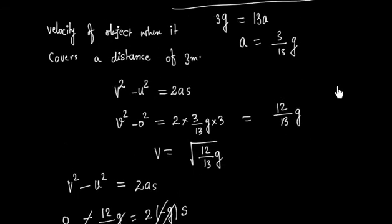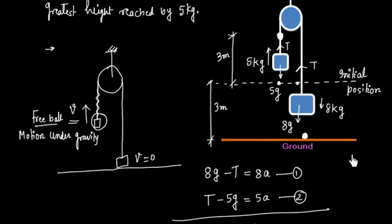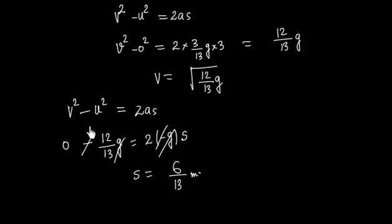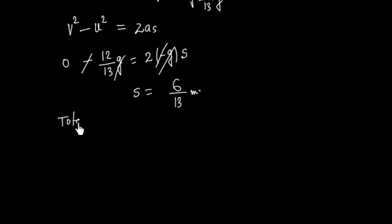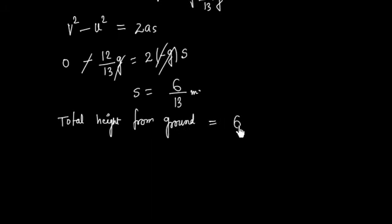What is the total height from the ground? Initially the 5 kg mass was at 3 meters height. It then traveled up 3 meters while connected. After the string went slack, it traveled a further v²/2g = 9/13 meters. So total height from ground equals 6 plus 9/13 meters.